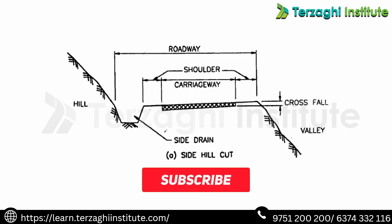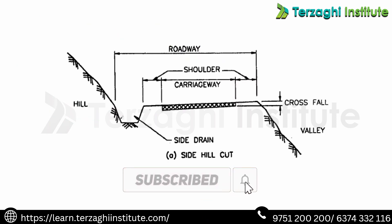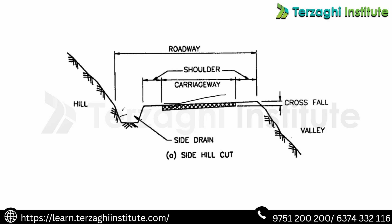This is the normal side hill cut. There is a side drain for drainage purpose. The carriageway is the main road surface. On one side is the hill side, and the other side is the valley side. Crossfall is nothing but camber — we have a cross slope for drainage purpose, making the road smooth and comfortable. Shoulder helps reduce the roadway edge, and this is the basic outline of a hill road cross-section.